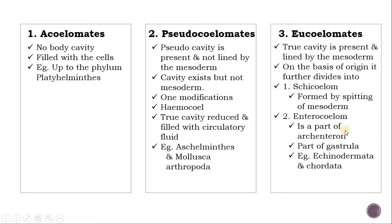The enterocoelous type of coelom is present in deuterostome animals. The coelom is formed from the fusion of internal outgrowths of the archenteron or gut. These pouches pinch off and fuse together to form the coelom. This occurs during the gastrula stage in early embryonic development. Examples of enterocoelous animals are Echinodermata and Chordata.